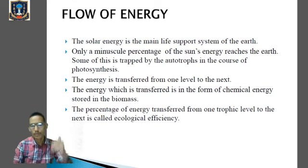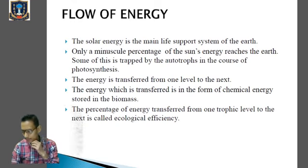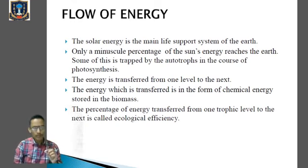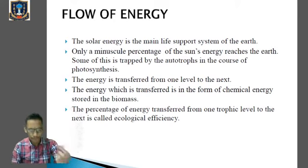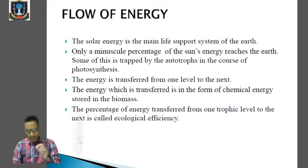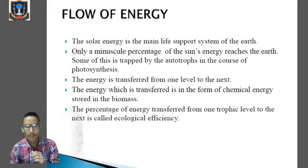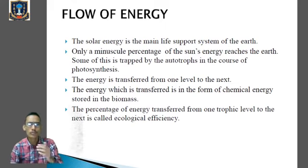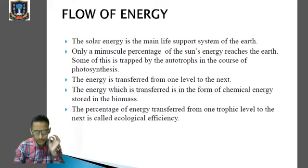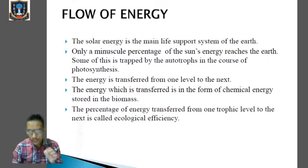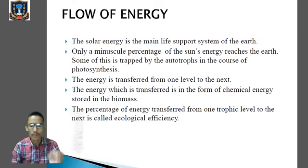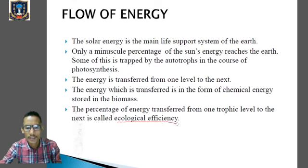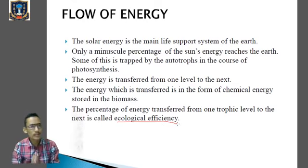The energy trapped by the producers will move from one trophic level to the next trophic level — trophic levels we have already covered in previous classes. From one trophic level to the next, the energy usually flows, but a minimum amount of energy will be lost whenever energy is transferred from one trophic level to another. The percentage of energy transfer from one trophic level to the next is called ecological efficiency.